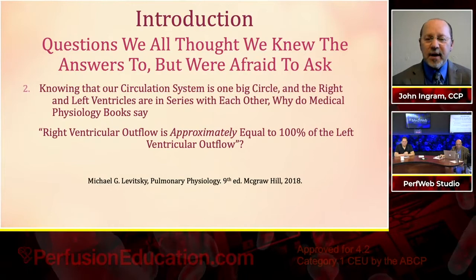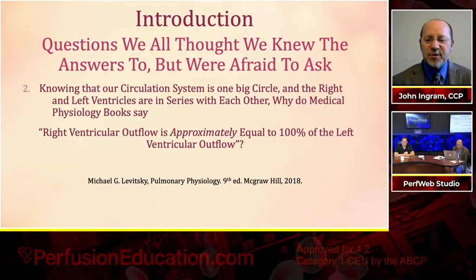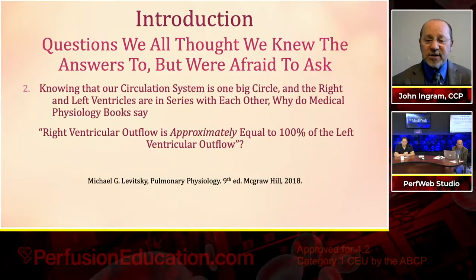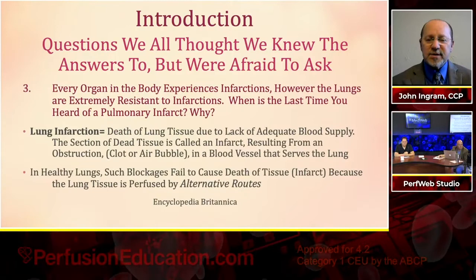Expanding on question number two — these aren't things I'm making up. The right and left ventricles are in series with each other, so why do physiology books say right ventricular outflow is approximately equal to 100% of left ventricular outflow? This is Vitsky's Pulmonary Physiology 2018 medical textbook, which quotes this exact statement.